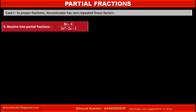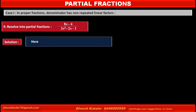Problem 9: Resolve into partial fractions (8x - 4) / (3x² - 2x - 1). Solution: In the given fraction, the denominator is a quadratic equation, so we can factorize it. Therefore this fraction becomes equal to (8x - 4) / [(x - 1)(3x + 1)].